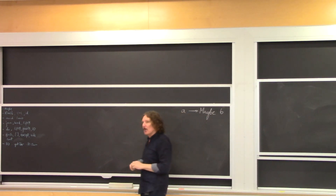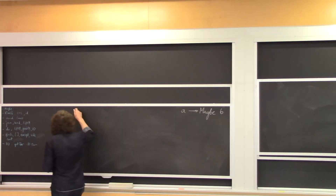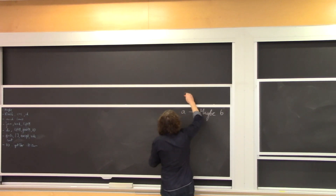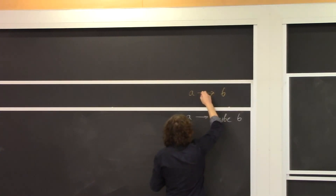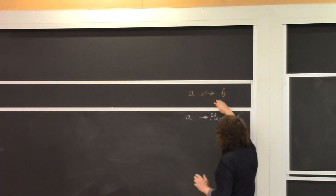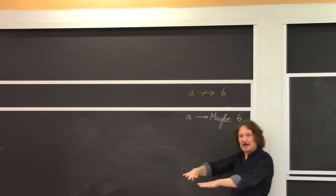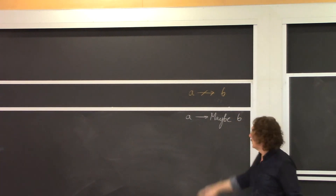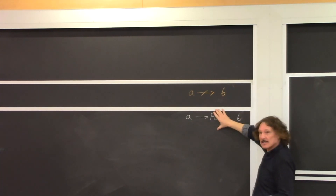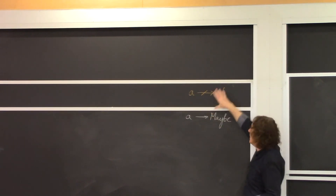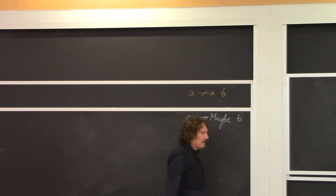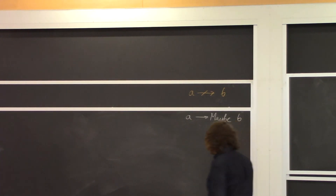In the Kleisli category, objects are the same as in Haskell — types. But morphisms are different. A morphism in the Kleisli category that goes from A to B is represented below in Haskell as a pure function from A to Maybe B. You have to distinguish: this is one category, this is another. This is where we are doing the programming; the Kleisli category is what we are thinking about in our heads.